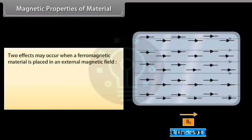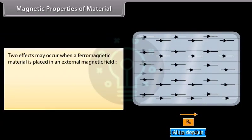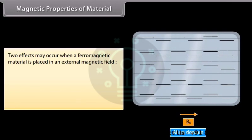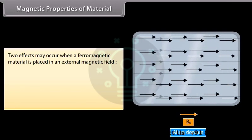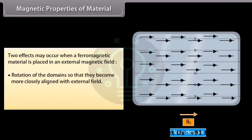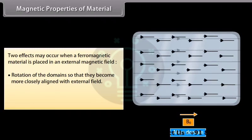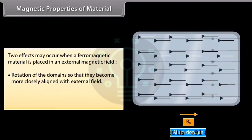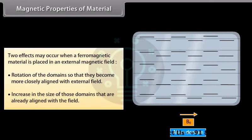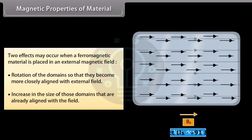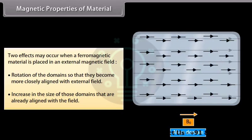Two effects may occur when a ferromagnetic material is placed in an external magnetic field: rotation of the domains so that they become more closely aligned with the external field, and increase in the size of those domains that are already aligned with the field.